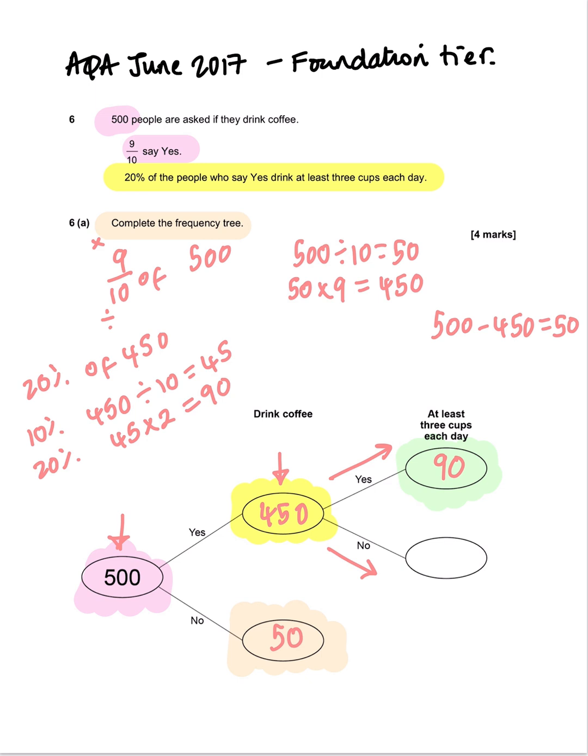We've got that last box to fill out now on our frequency tree. Those people that don't drink at least 3 cups each day. Well, these 2 boxes should add to 450. So we're going to do 450 subtract 90, which is 360. So 360 do not drink at least 3 cups of coffee each day.